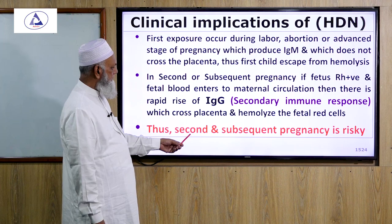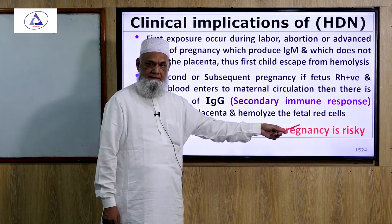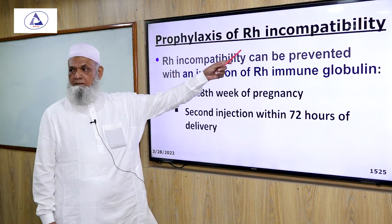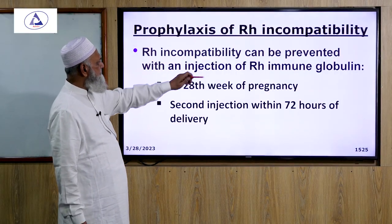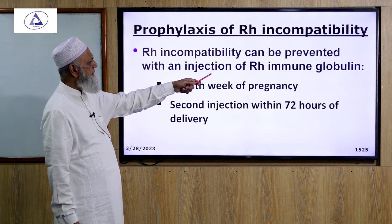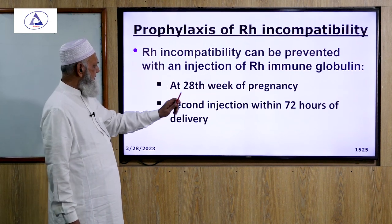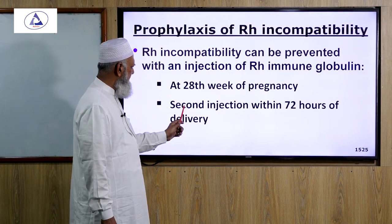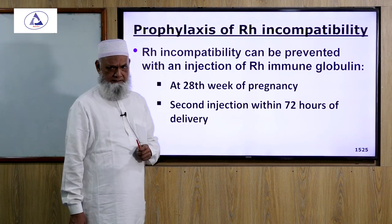The second and subsequent pregnancies are risky. Prophylaxis of Rh incompatibility: Rh incompatibility can be prevented with an injection of Rh immunoglobulin at the 28th week of pregnancy, and a second injection within 72 hours of delivery.